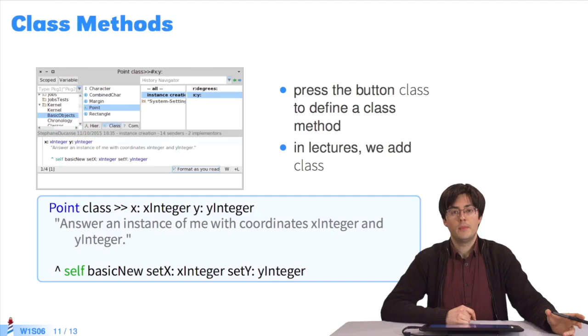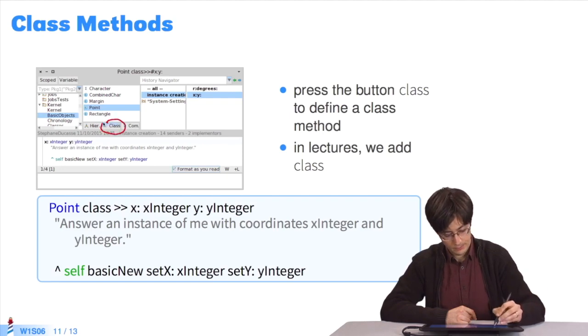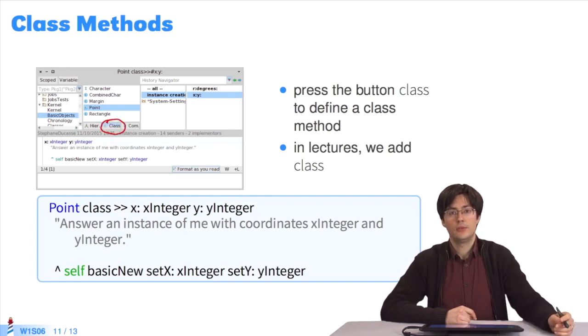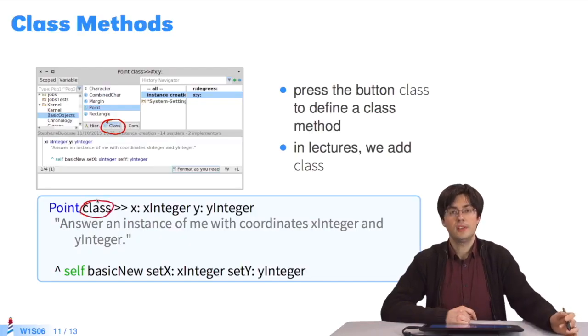Class methods let you send messages to classes. Classes are objects too, so you can send messages to classes. And to define a class method, you press the class button in Nautilus and define the class method. In the slides, we systematically add the word class to distinguish a method that'll be executed on a class, rather than on an instance of the class. So here, the method x y will be executed on the class Point, not on an instance of the class Point.